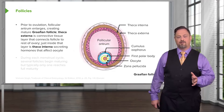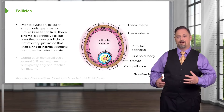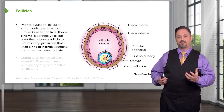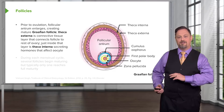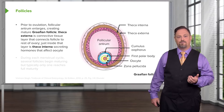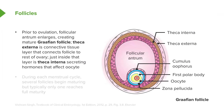Prior to ovulation, the follicular antrum is going to get bigger and bigger. At this point, we call the entire assemblage of follicular cells, oocyte, and connective tissue surrounding it the Graafian follicle. We're going to have a couple of subdivisions of connective tissue surrounding these follicular cells: the theca externa, which anchors it to the egg, and the theca interna, which secretes hormones that affect the oocyte's development and make it capable of being fertilized if it is ovulated.